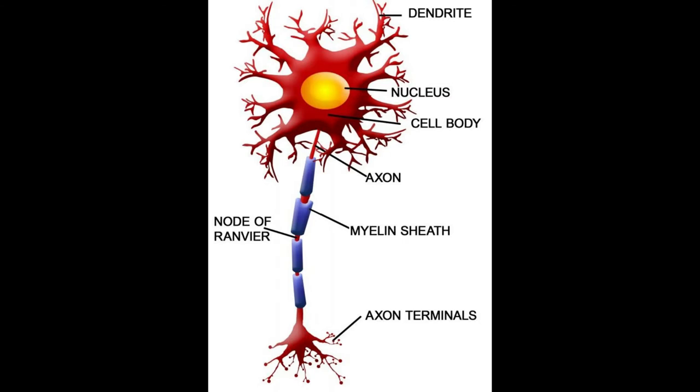Diabetic patients are advised to strictly keep their condition under control, as well as people with high cholesterol. White matter disease affects the white matter which is present between the neurons of the brain and spinal cord. It is composed of nerve fibers which help in communication and is covered by a fatty sheath called myelin.